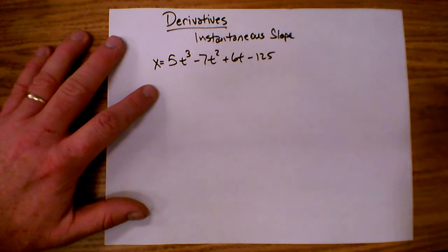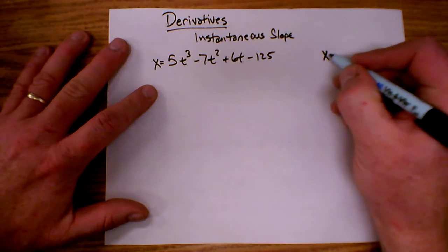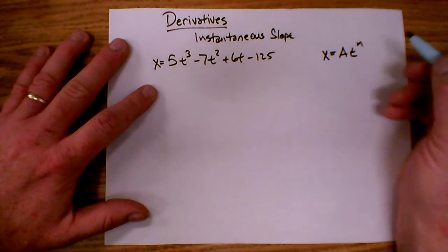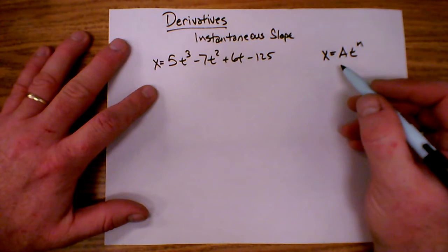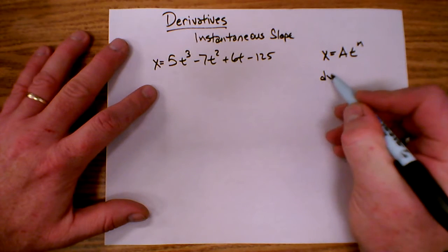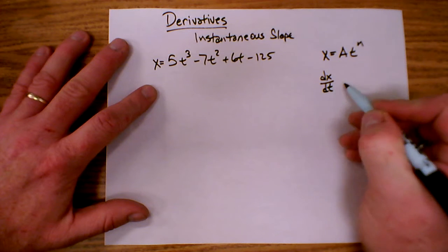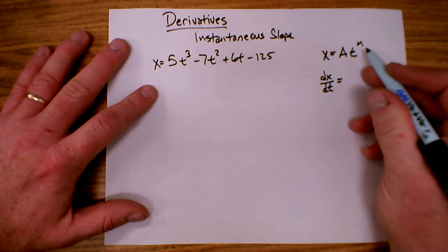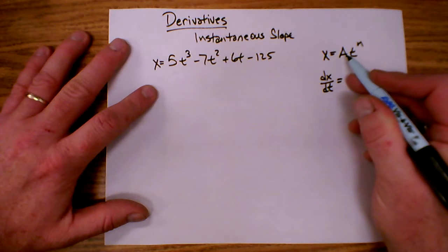First let's take a look at a generic sense. If I have x equals some constant a times t to the n, then the derivative of x with respect to time written dx dt. The way I find this is I take the exponent, I bring it down in front and multiply.